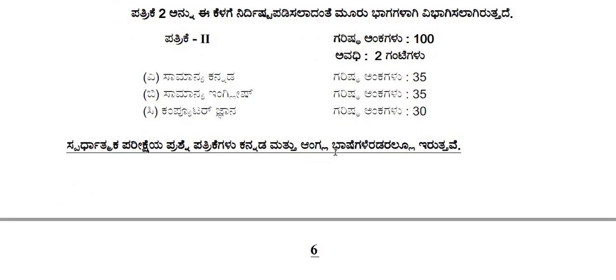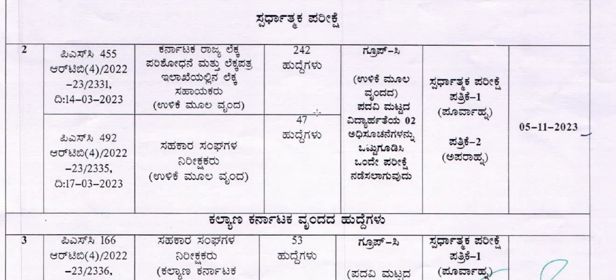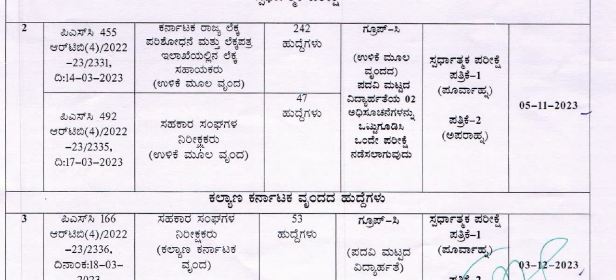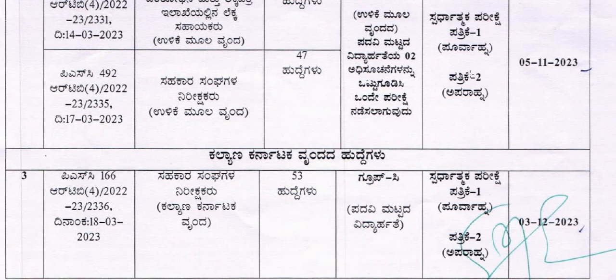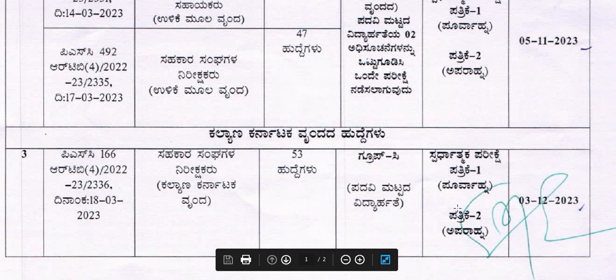The first group is ranked 3rd, and the 1st is 1. The second category can be 2-3 groups. There are these 2-3 groups, including Group C, which can apply to the same 2-3 groups.